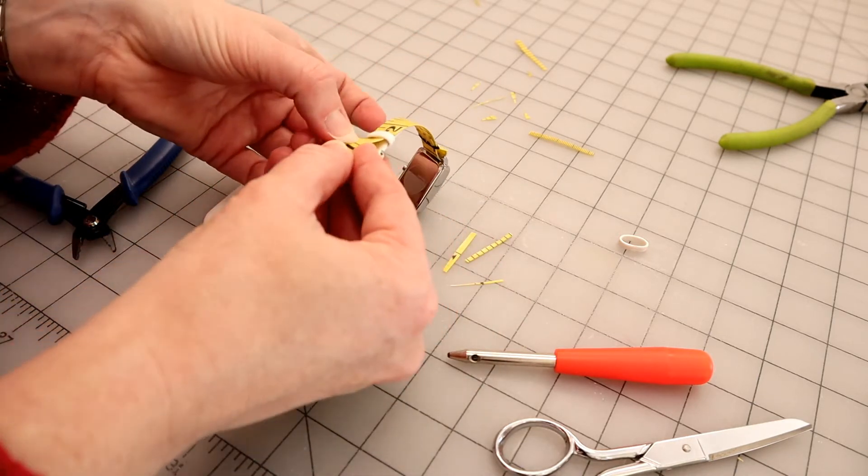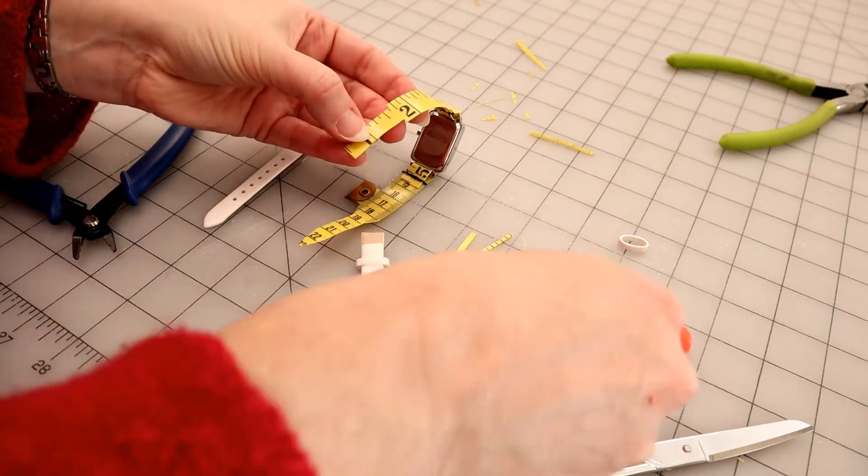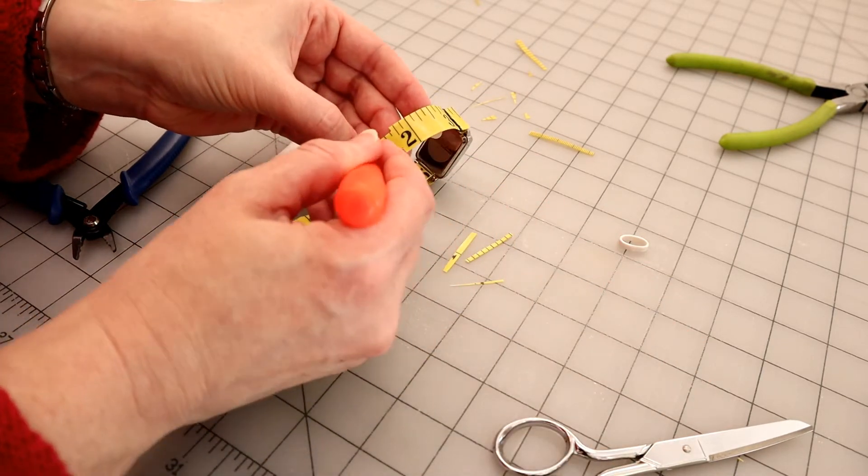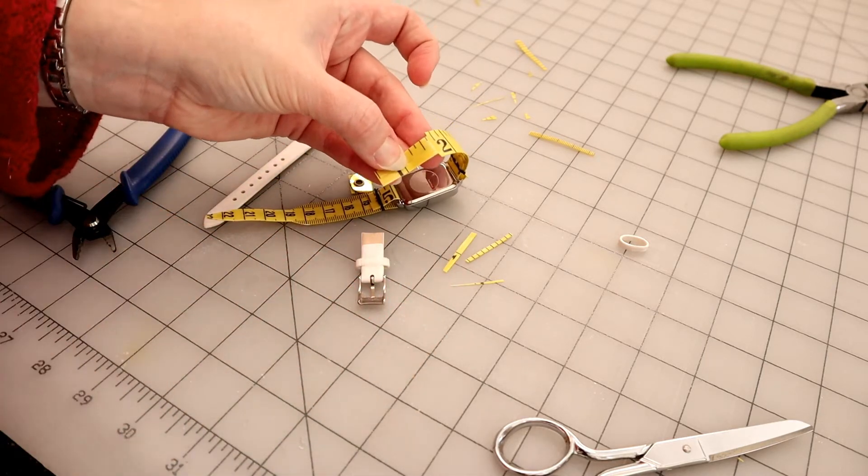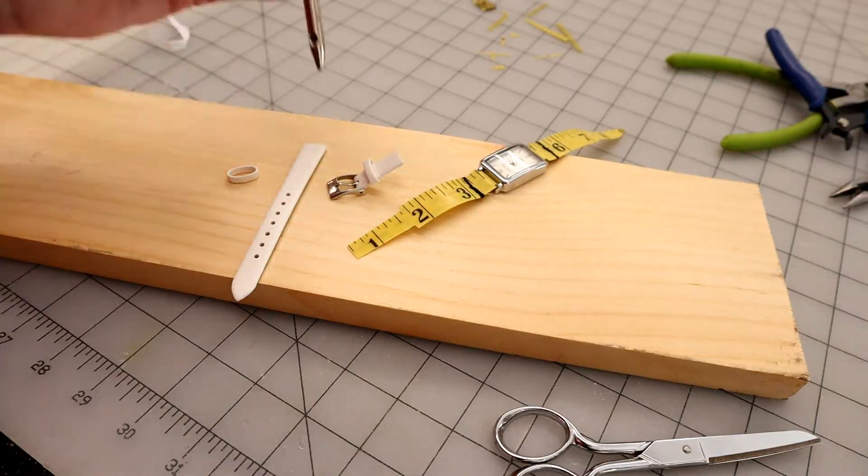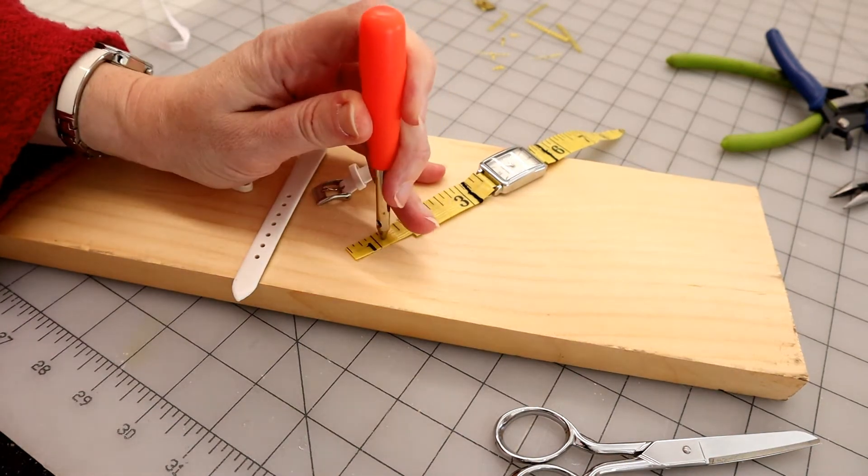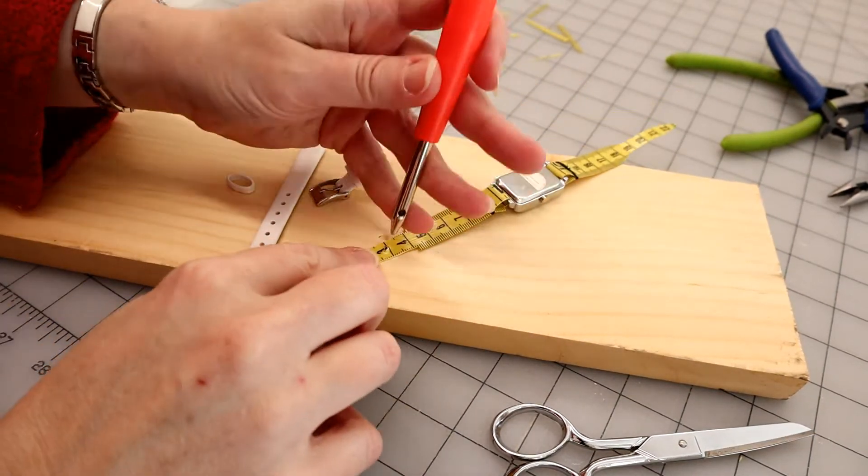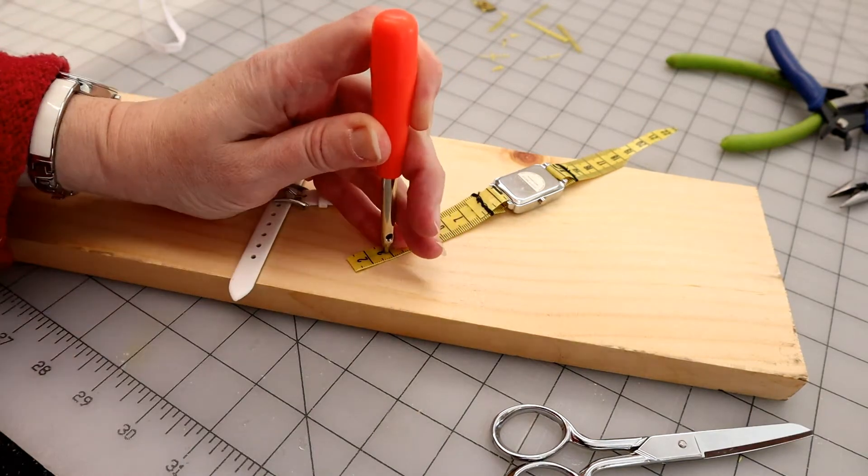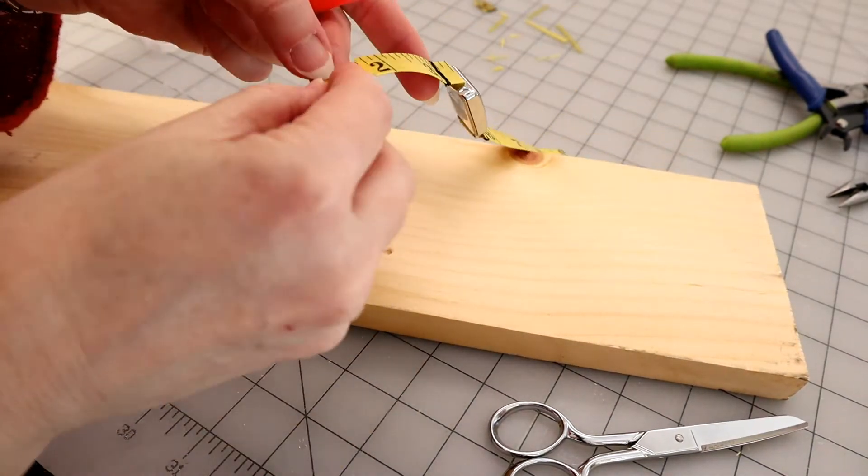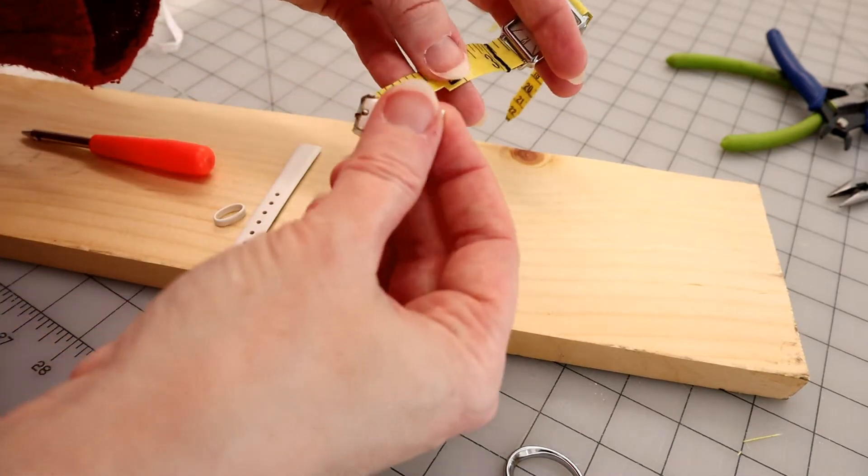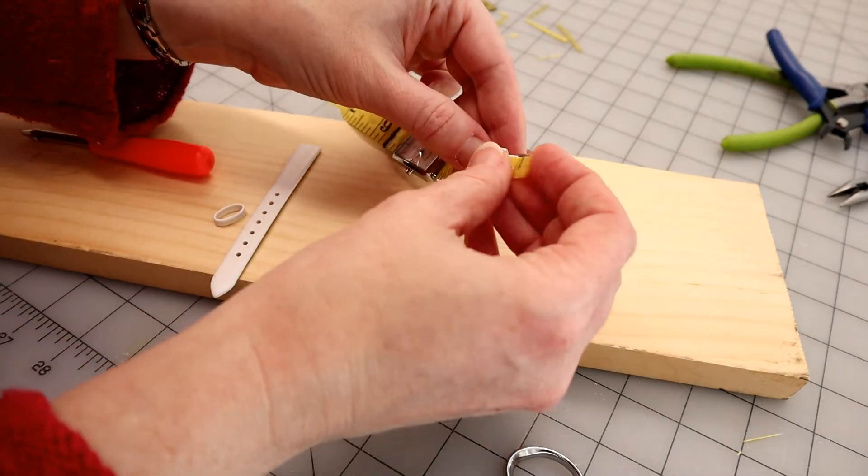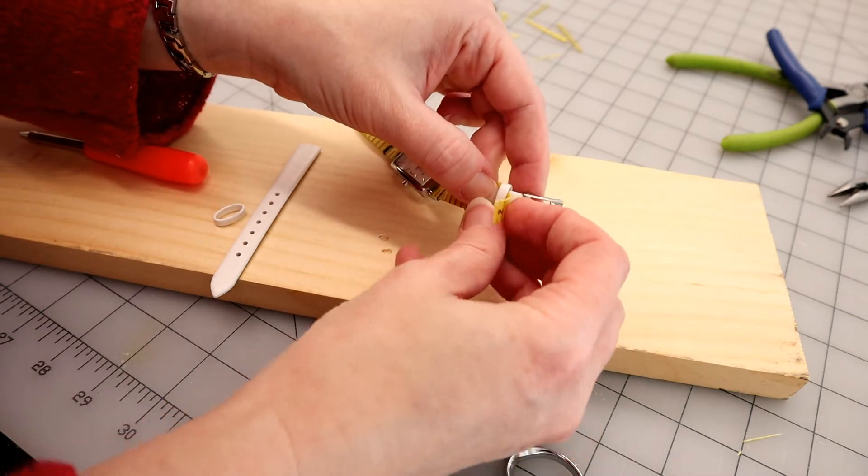So that I can loop this around through and sew this in place just like I did on the other side. All right, so I'm going to take my tailor's awl and my nail hole.